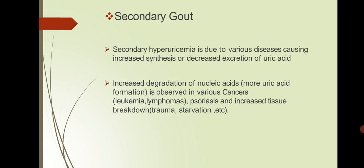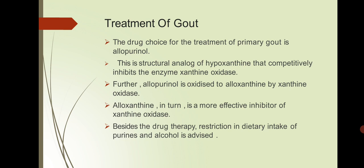Second is secondary gout. Secondary gout hyperuricemia is caused by various diseases causing increased synthesis or decreased excretion of uric acid. Increased degradation of nucleic acids and more uric acid formation is observed in various diseases like cancer, cirrhosis, and increased tissue breakdown. Additionally, trauma, starvation, and impairment in renal function cause accumulation of uric acid.